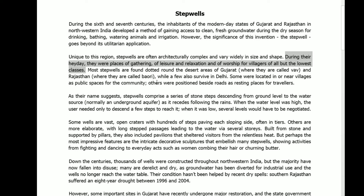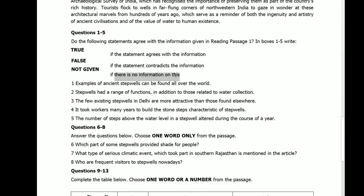Next, statement three: the few existing stepwells in Delhi are more attractive than those found elsewhere. Most stepwells are found dotted around the desert areas of Gujarat, where they are called Vav, and Rajasthan, where they are called Bauri, while a few also survived in Delhi. There is no information given about Delhi stepwells being more attractive than those found elsewhere. So the answer is not given.